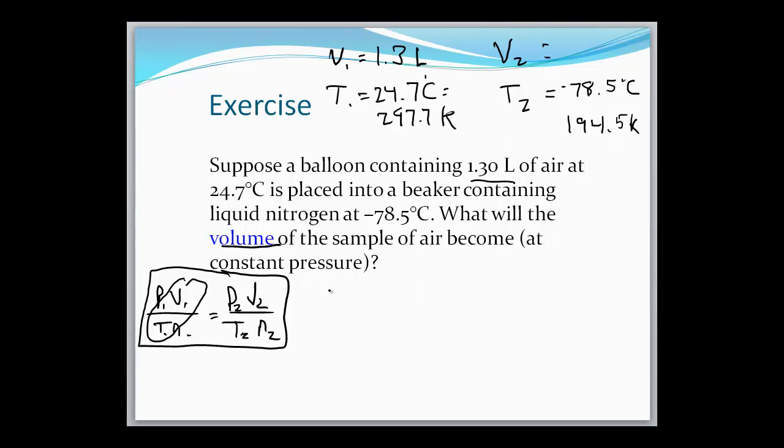Okay, so let's put our variables in. We have 1.3 liters over 297.7 Kelvin is equal to V2 over 194.5 Kelvin. When we solve for V2, we get 0.85 liters.